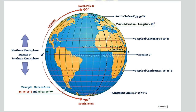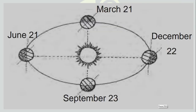Here is a diagram showing the Northern and Southern Hemispheres and the equator along with the latitudes. The diagram also shows the equator, Tropic of Cancer, Tropic of Capricorn, Prime Meridian, Arctic Circle, and Antarctic Circle, along with the North Pole and South Pole. Another diagram shows the position of the Earth on December 22, March 21, June 21, and September 23. On December 22 there is the shortest day and longest night, on June 21 the longest day and shortest night, and on March 21 and September 23 the days and nights are equal.